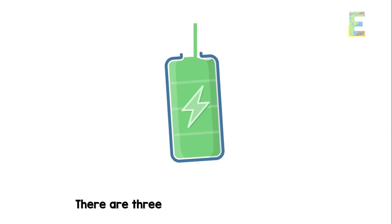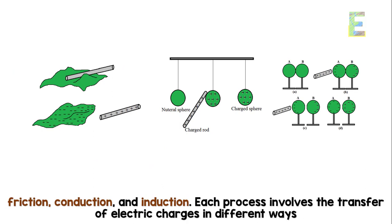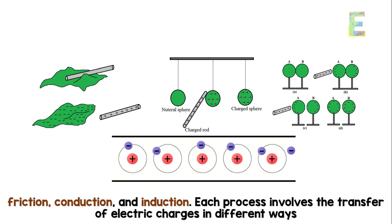Types of charging: there are three primary methods of charging - friction, conduction, and induction. Each process involves the transfer of electric charges in different ways.